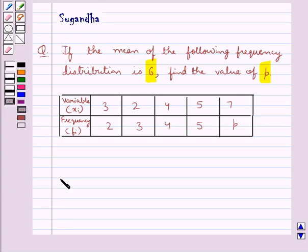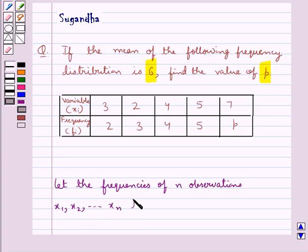Let the frequencies of n observations x1, x2 and so on up to xn be f1, f2 and so on up to fn respectively.